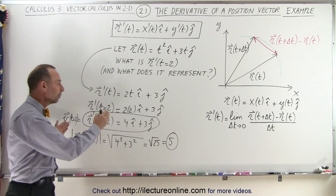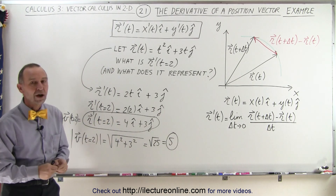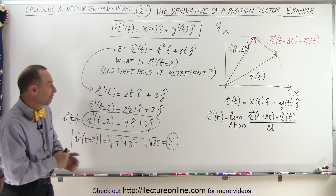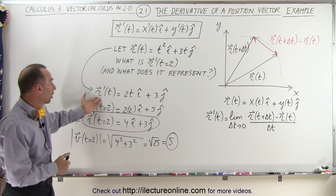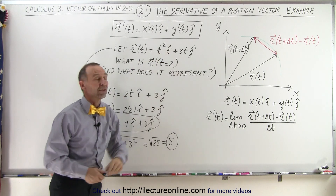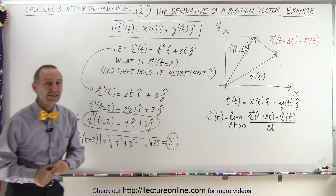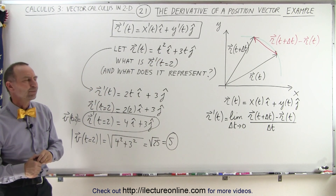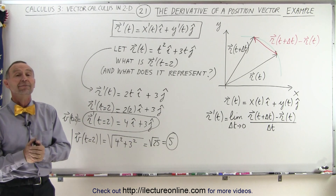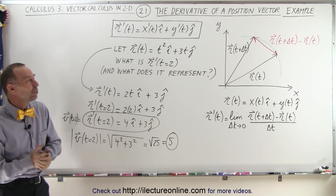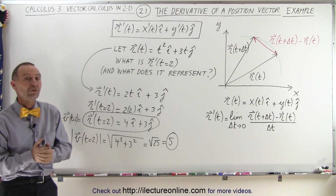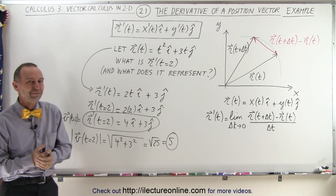So that's how we want to interpret the result of the derivative of the position vector r, where r is equal to t squared in the i direction plus 3t in the j direction. That's how we do that. Stay tuned for a few more videos on how to deal with the derivative of a position vector.